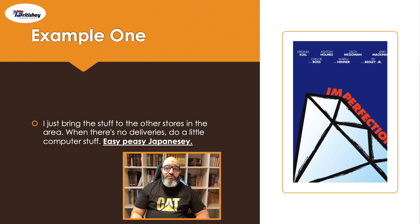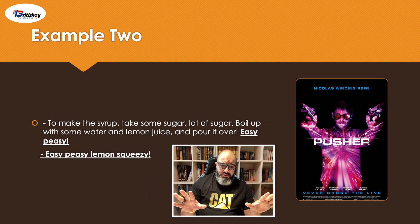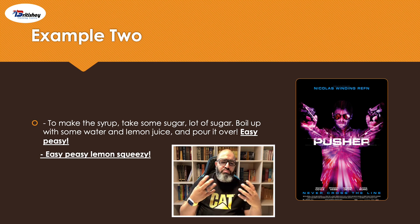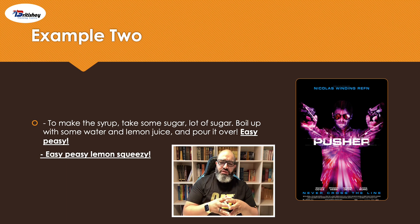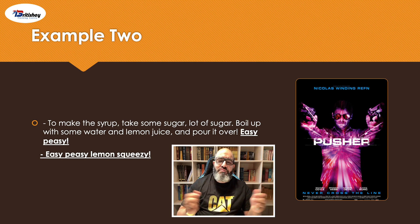Another example from the movie Pusher. To make the syrup: take some sugar, a lot of sugar, boil it up with some water and lemon juice, and pour it over — easy peasy. And then the other guy responds: "easy peasy lemon squeezy."